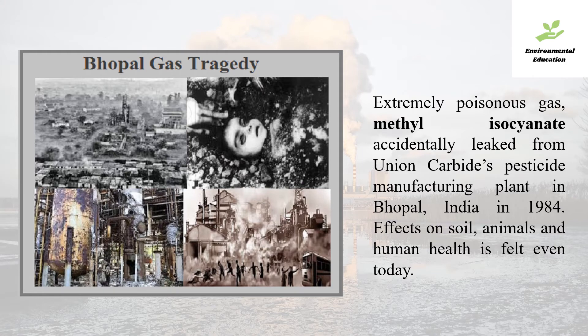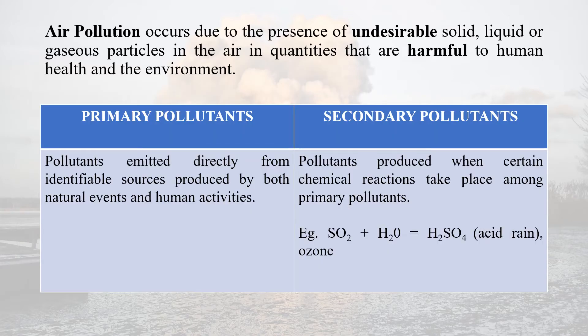One of the most groundbreaking pollution awareness examples in India is the Bhopal gas tragedy, where extremely poisonous methyl isocyanate gas accidentally leaked from the Union Carbide pesticide manufacturing plant in Bhopal in 1984. The impacts and effects on soil, animals and human health are felt even till this day. Air pollution occurs due to the presence of undesirable solid, liquid or gaseous particles in the air in quantities that are harmful to human health and the environment.